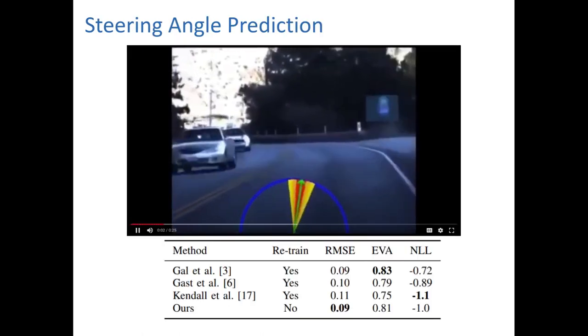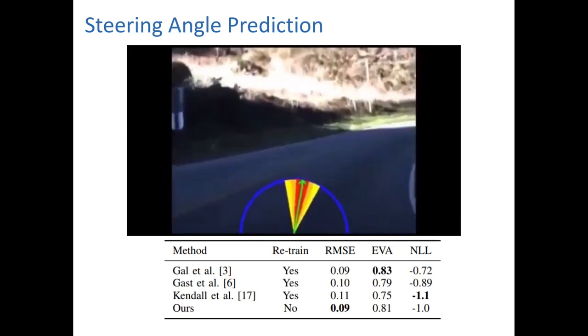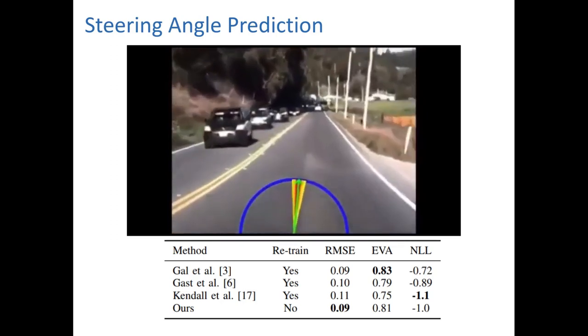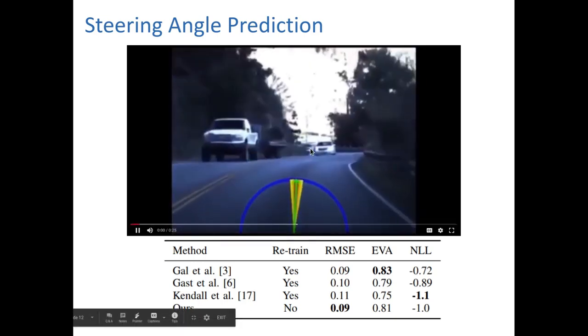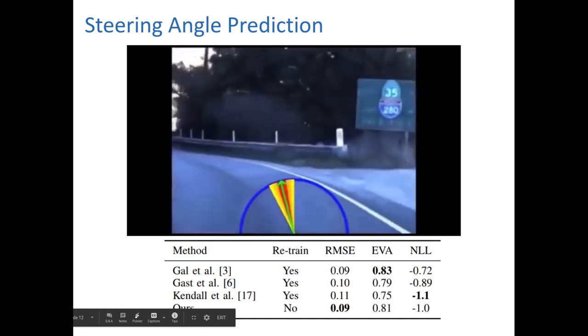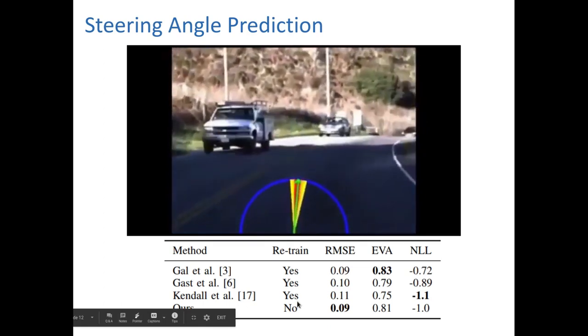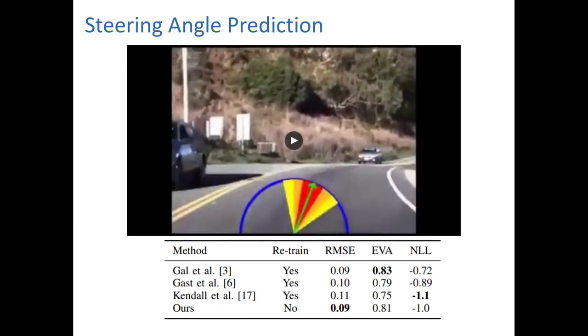On steering angle prediction, we adapt a neural network used to predict steering angle from images, and add also uncertainty estimation, that you can now see in several colors, like red and yellow. Red for the first standard deviation, and yellow for the others. Our framework has not only very high prediction in steering angle, but also very accurate uncertainty estimation, which none of the state-of-the-art methods have at the same time.